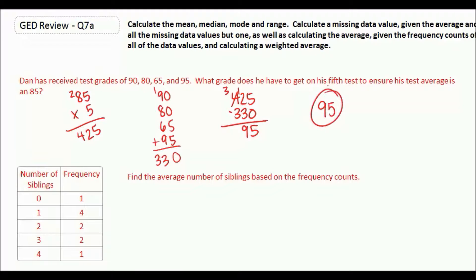Now we're going to find the average number of siblings based on the frequency counts provided in the table. It's often good to take the data and write it out so we can see it a little bit better. So 0 occurs once, 1 occurs four times, 2 occurs twice, 3 occurs twice, and 4 occurs once.